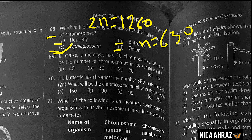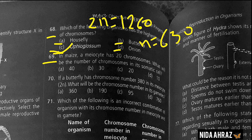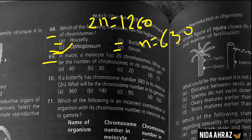If a meiocyte has 20 chromosomes, what will be the number of chromosomes in its somatic cell? Germinal cells are diploid and act as meiocytes, which undergo meiosis to produce haploid gametes. Thus meiocytes have the same diploid number of chromosomes as somatic cells. Option C is the correct choice.